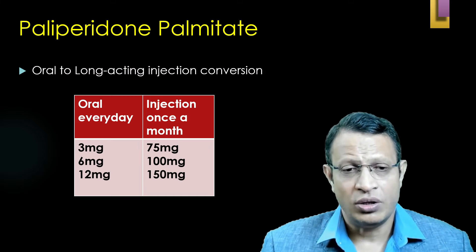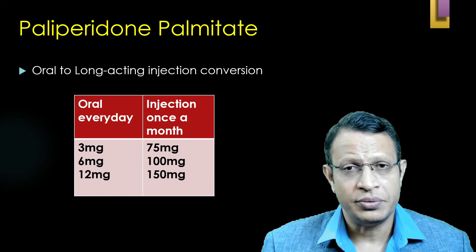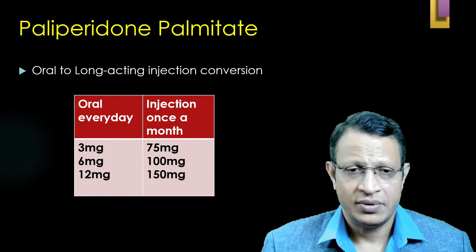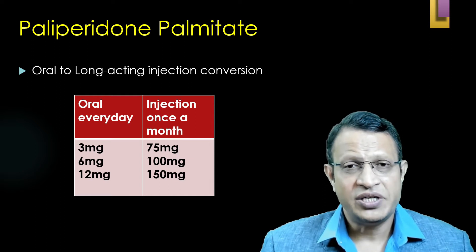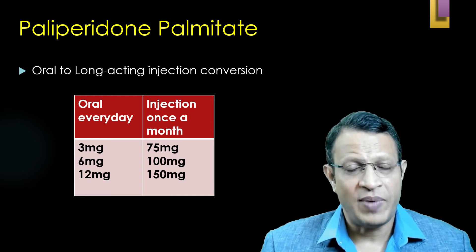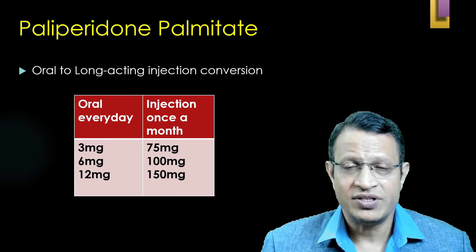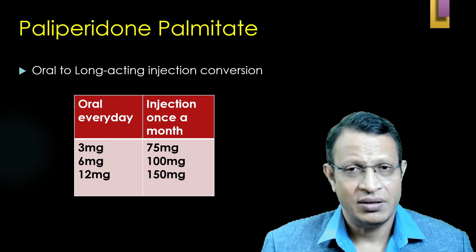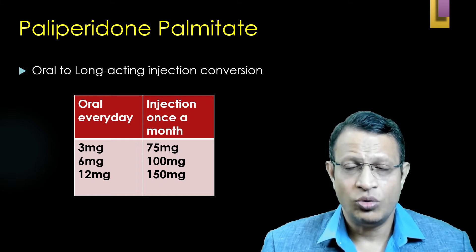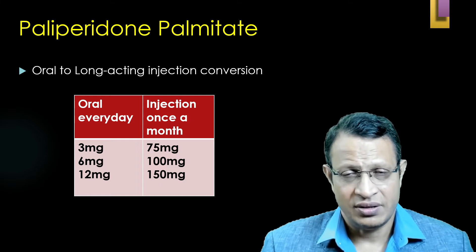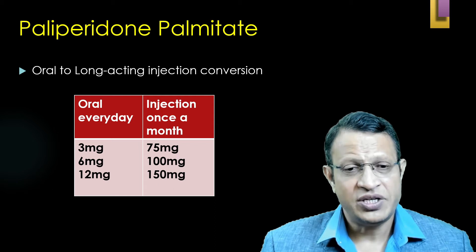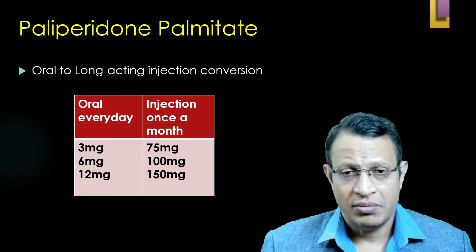If the patient is on oral paliperidone and you want to convert it to IM: if the patient is on 3 mg orally, you will give 75 mg monthly. If the patient is on 6 mg, you will give 100 mg. If the patient is on 12 mg, you will give 150 mg monthly injections.